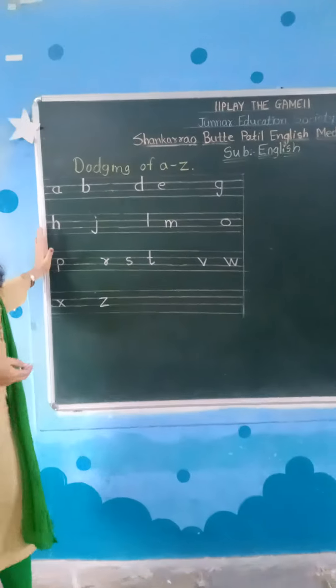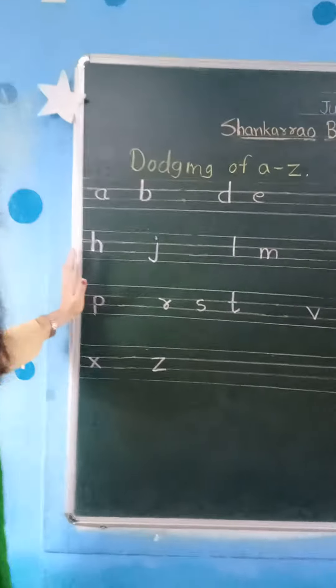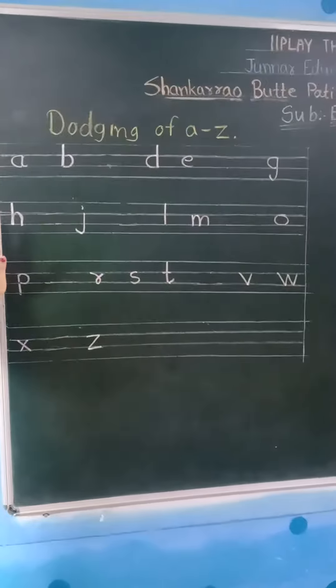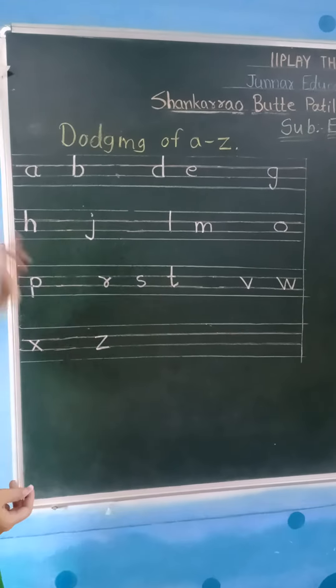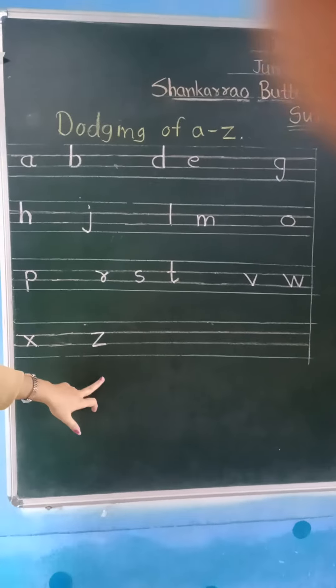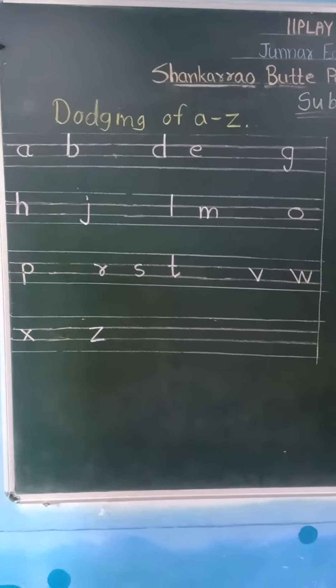So this is what? These are alphabets — 26 alphabets, A to Z. So let's see.